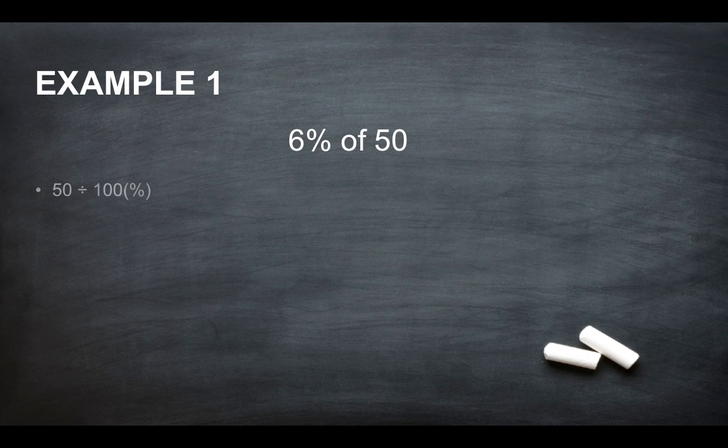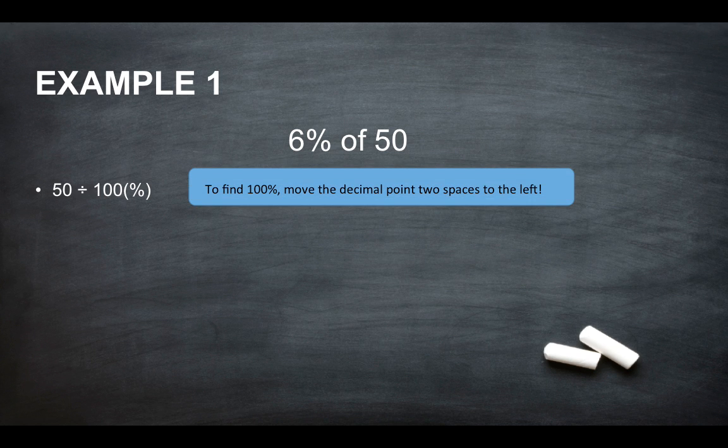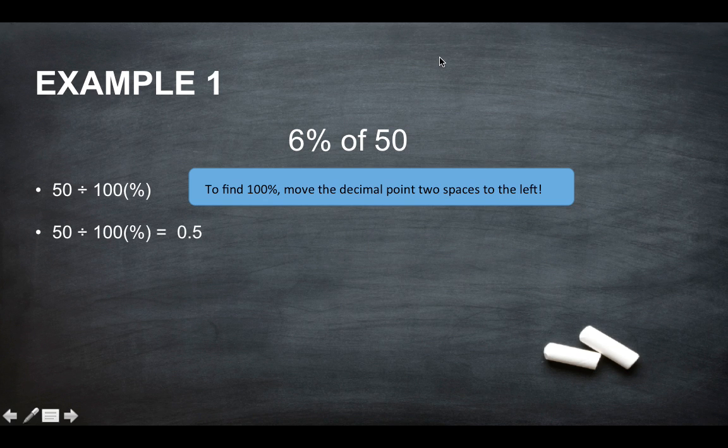So 6% of 50. In order to work this out, you would do 50 divided by 100. To find 100%, you would move the decimal point two spaces to the left. So this would give you 0.5.